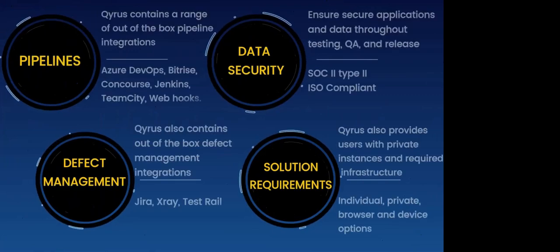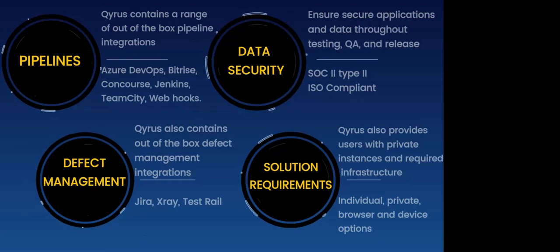Though Kairos is powerful, we all know the story of the one ring that ruled them all — and this is very far from it. The platform integrates out of the box with a range of CI/CD pipelines as well as defect management tools. These features are founded on the pillars of security, with the industry-standard SOC 2 Type 2 compliance as well as ISO compliance. Additionally, Kairos offers private instances and private infrastructure, with private browsers and private device options as well, going above and beyond the security standards.